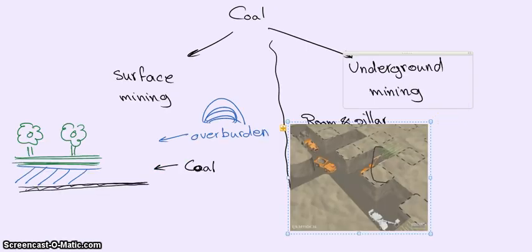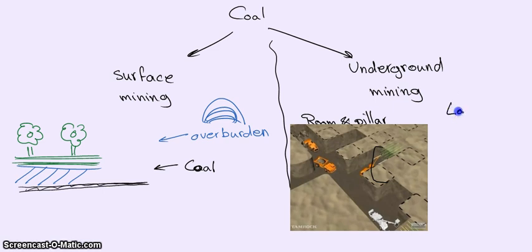The other method is the long wall mining, where the coal is allowed to collapse in a controlled manner. And this method is better because it allows huge blocks of coal to be removed without leaving anything behind.